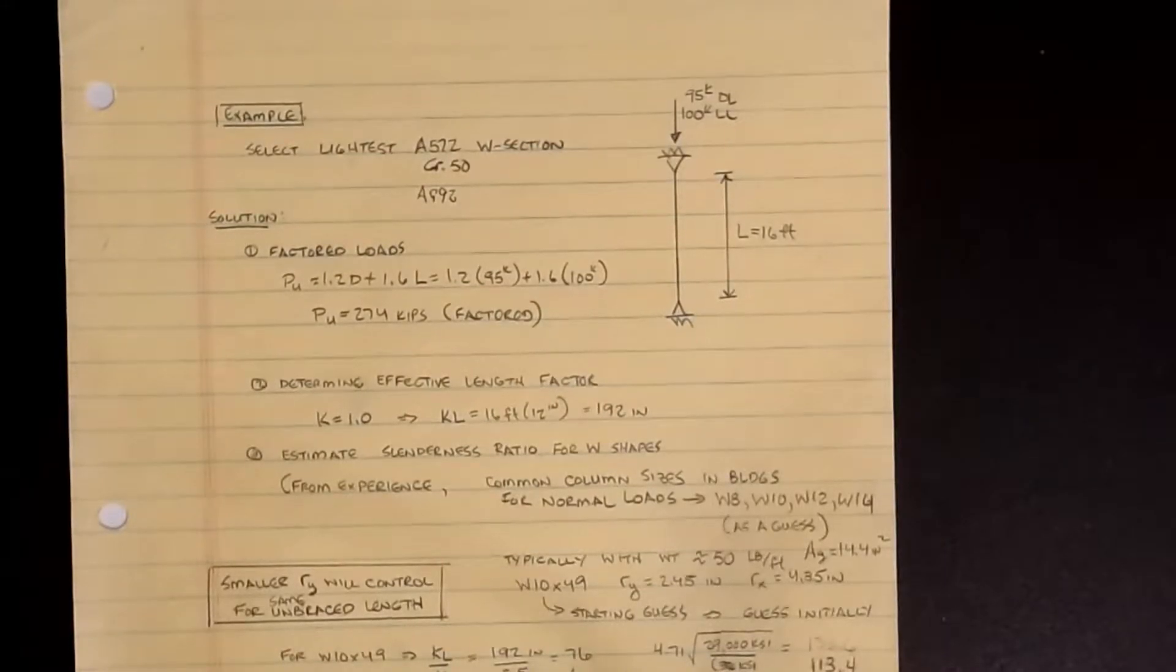Welcome back my steel design friends. In our last video I showed you how to use the AISC manual to determine whether you're in the inelastic buckling region or the elastic buckling region for columns. We used the equations and a guess and check methodology for sizing a column.